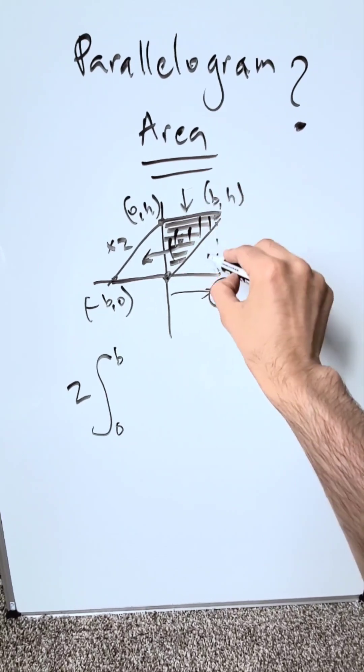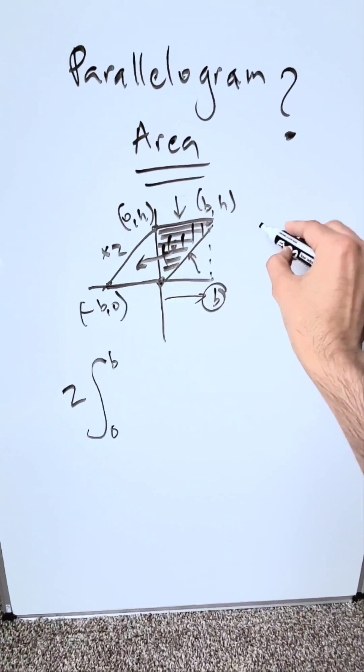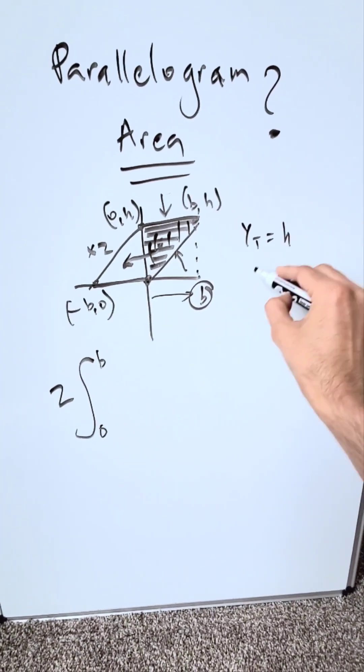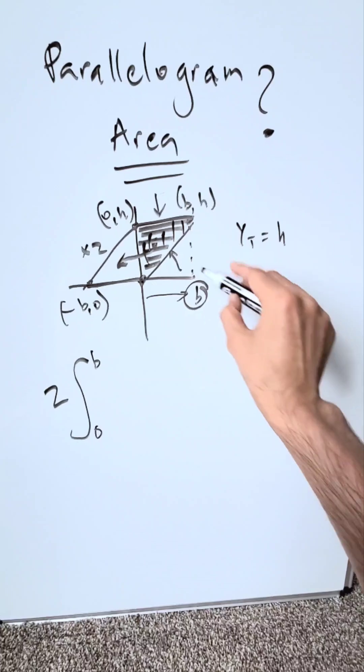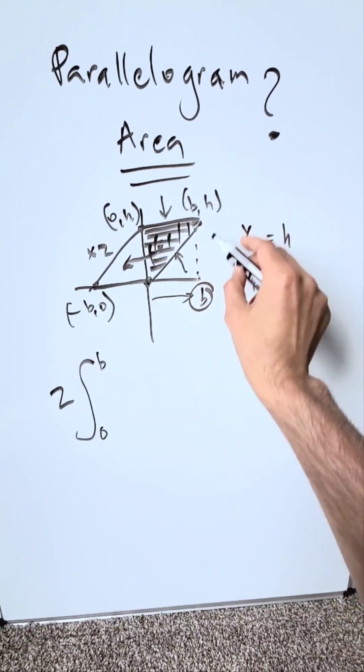I need to have this function and I need to have this function. The function on the top is a horizontal line going through (0,h). That right there, y_t, your top function, is equal to h. My y_b, my lower or bottom function, is this diagonal line going through the origin.